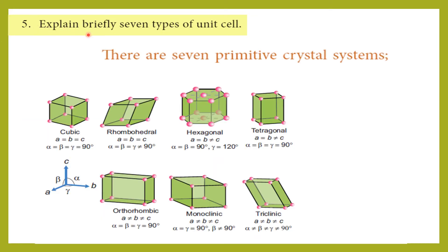Question: explain briefly the seven types of unit cells. The seven types are: cubic, rhombohedral, hexagonal, tetragonal, orthorhombic, monoclinic, and triclinic. For a two-mark question, listing the seven names is enough. For a five-mark question, you can also mention the lattice parameters such as a = b = c and angles α = β = γ = 90° for cubic.